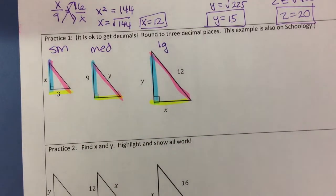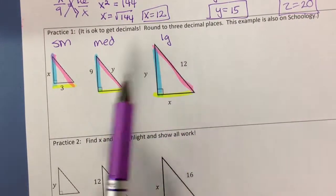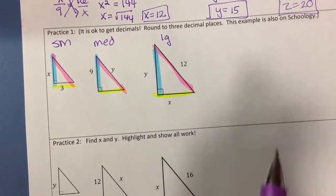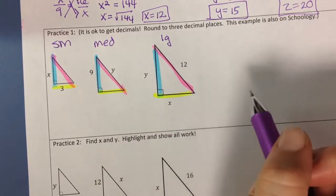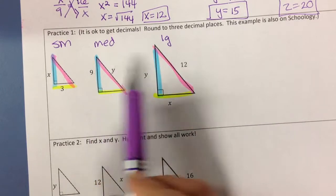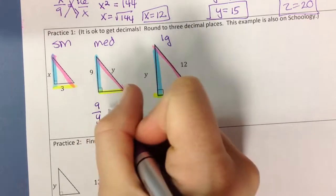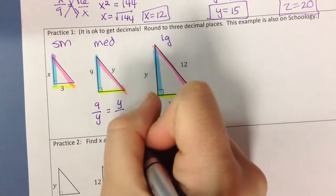Alright, so if I find y first instead, I'm going to use my medium and my large. And I'm using the blue and the pink. So I could set this up as the ratio of 9 to y equals y to 12. So 9 over y equals y over 12.